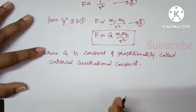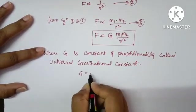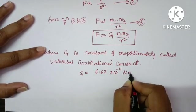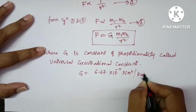And it also has a specific value: G = 6.67 × 10^-11 newton meter square per kg square.